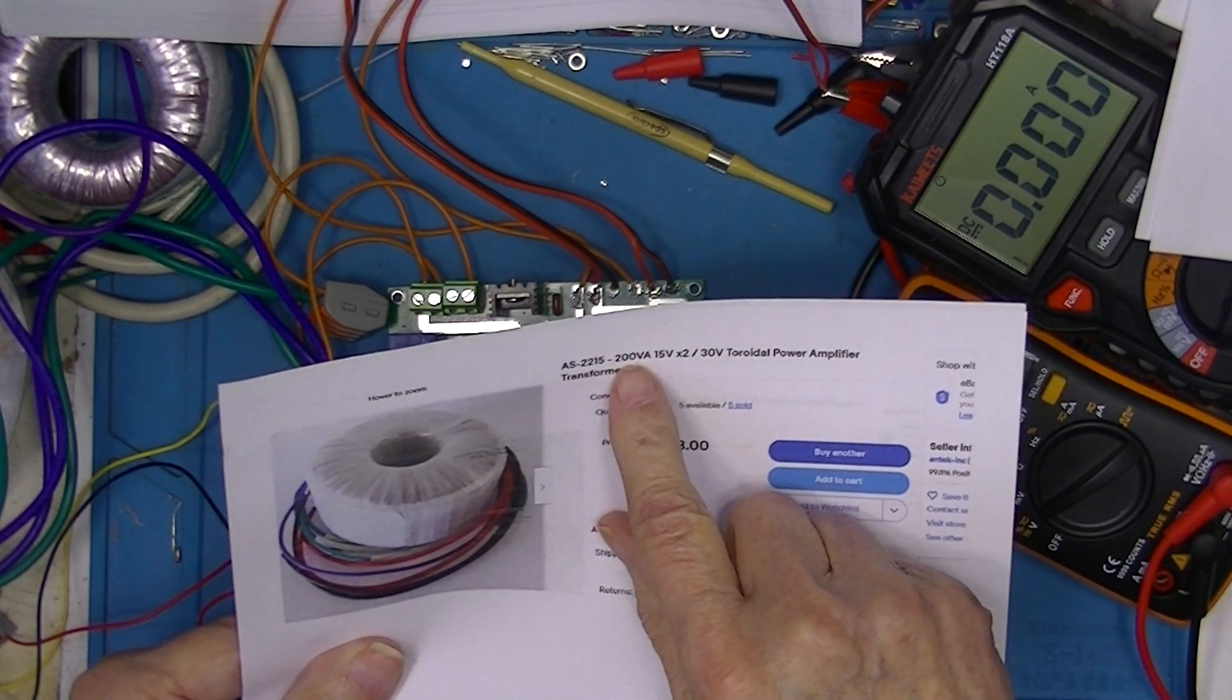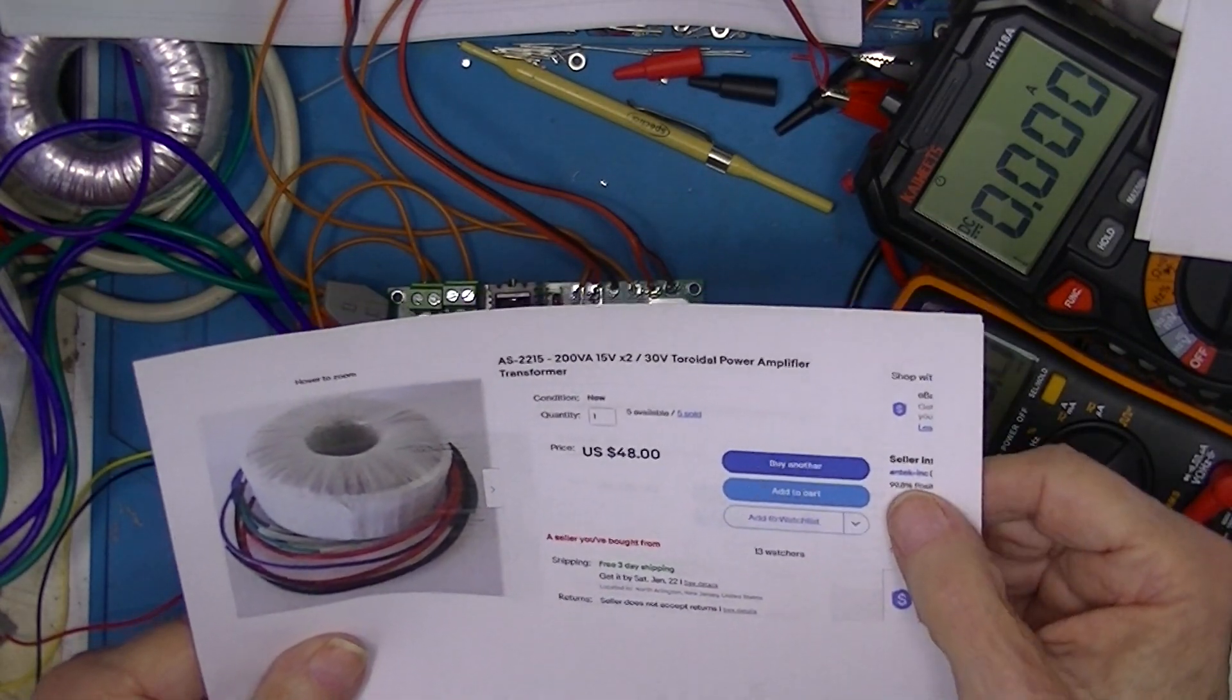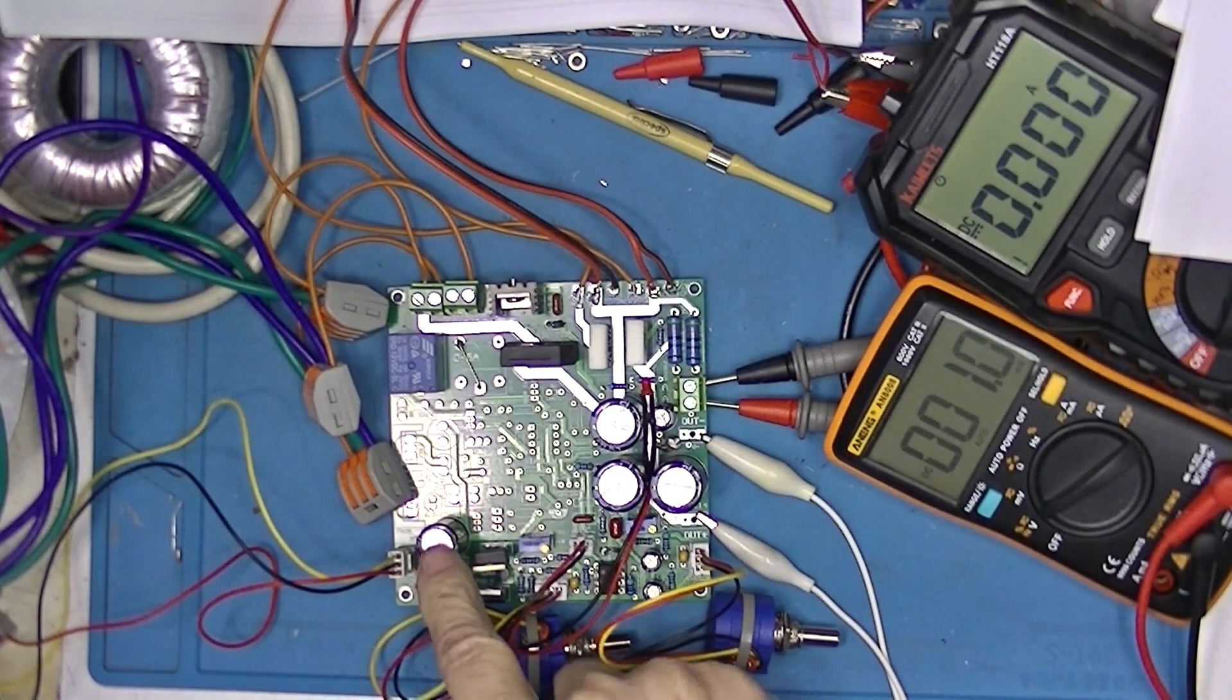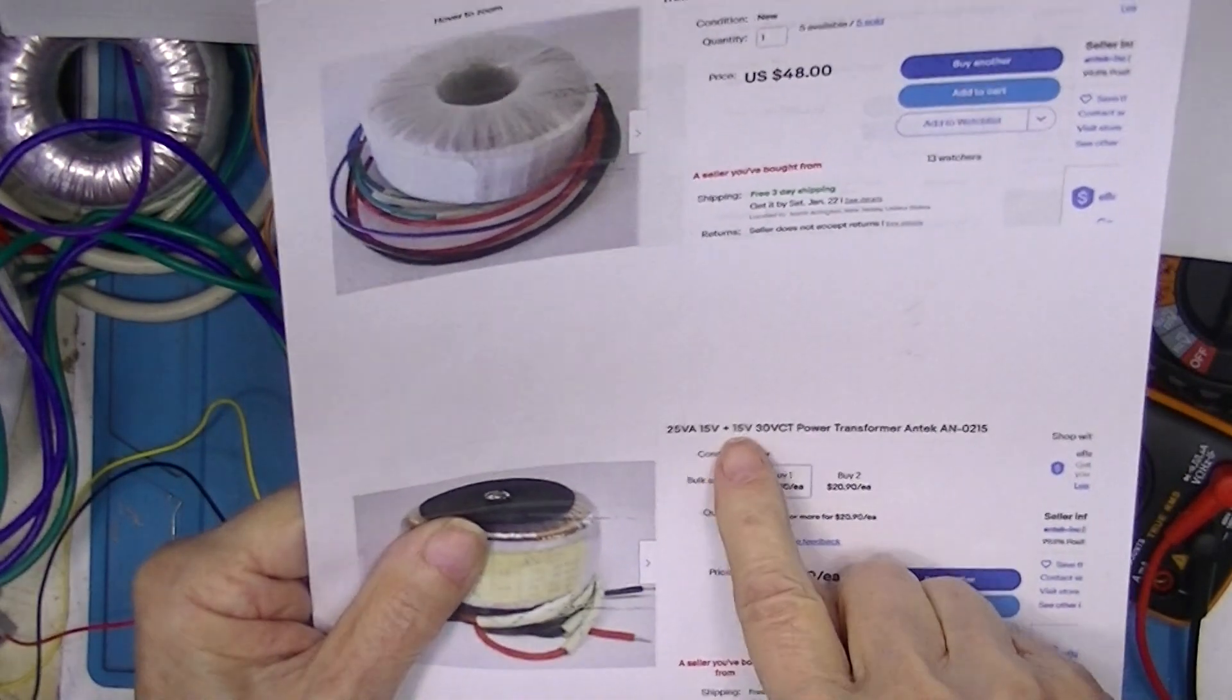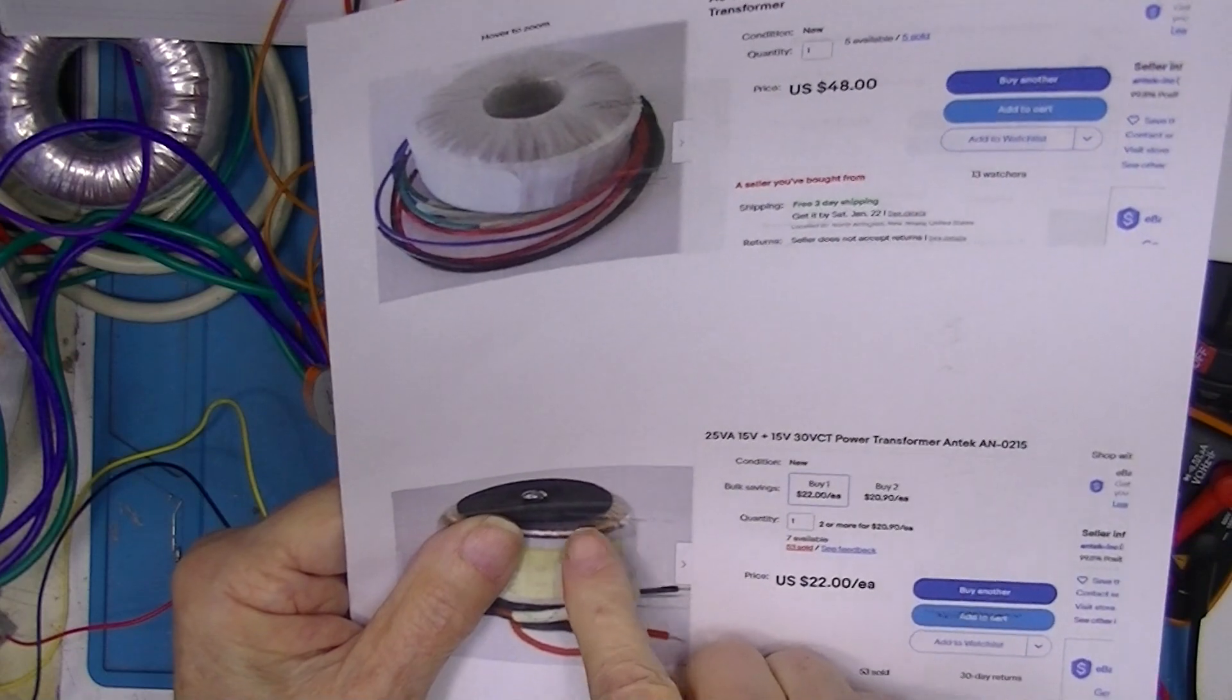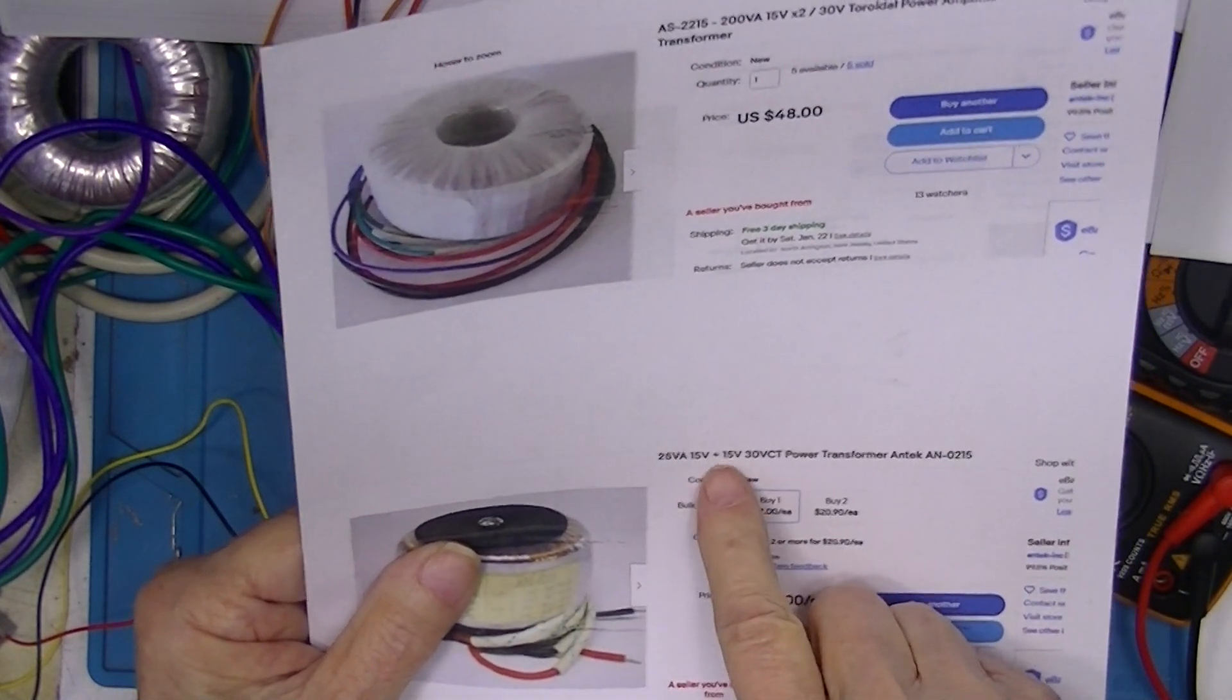The big transformer is a 15 times 2 or 30 volt 200 VA, 200 watts. Transformer costs $50 from this guy here. And the transformer for the control system is this one, a 15-15 or a 30 volt, but only rated at 25 watts. I think this is too big wattage wise and I'll bet it could get by with a 12-12 or 12 center tap, 24 center tap.